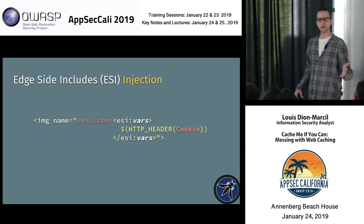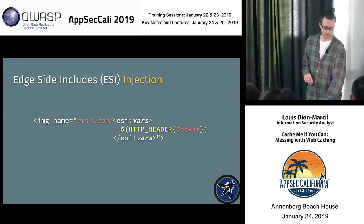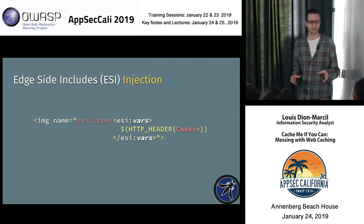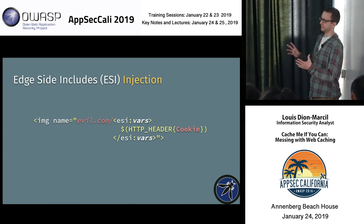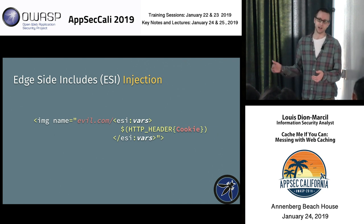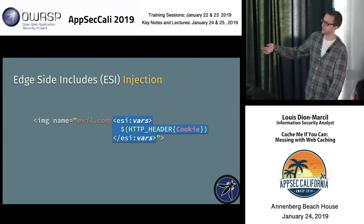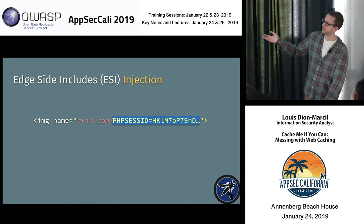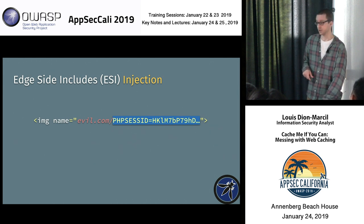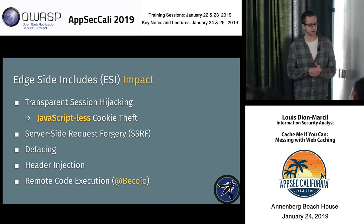Here's a practical snippet for stealing the PHP session ID cookie. You have an image tag pointing to my attacker-enabled server, with an ESI trick that takes the whole Cookie header — which may contain HTTP-only cookies — and injects it into the URL via search-and-replace. Once the application server sends this to the cache, the browser receives it and performs a GET request to evil.com thinking it's fetching an image. But it's actually sending me your session ID.